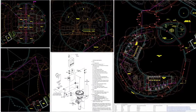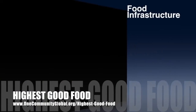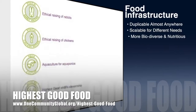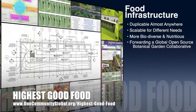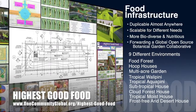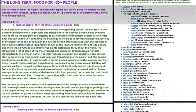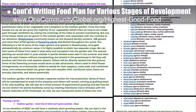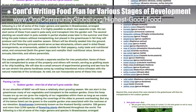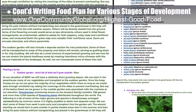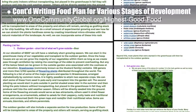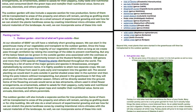One Community's approach to highest good food is duplicable almost anywhere, scalable for different needs, more biodiverse and nutritious, part of forwarding a global open source botanical garden collaborative, and includes nine different free-shared and duplicable growing environments. This week the core team continued writing the behind-the-scenes narrative and detailed food rollout plan for the various stages of development. We finalized the soil prep and planting steps and pushed the trial beds to the 100-to-400-person timeframe. We also reorganized the garden establishment plan, removing cardboard mentions and organizing everything into a more logical and sequential format.